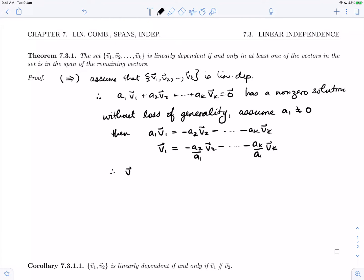We have just expressed v1 as a linear combination of the vectors v2 through to vk. Therefore v1 is in the span of these vectors v2 through to vk, which lets us conclude that at least one of the vectors, in our case v1, is in the span of the remaining vectors.